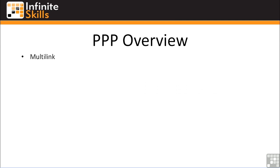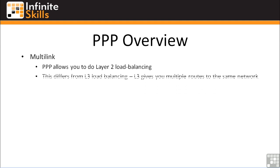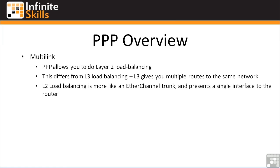Next, multi-link. PPP allows you to do Layer 2 load balancing, which differs from Layer 3 load balancing. Layer 3 load balancing gives you multiple routes to the same network in the routing table. Layer 2 load balancing is more like an EtherChannel trunk — it presents a single interface to the router. PPP, being a Layer 2 protocol, is much more efficient at load balancing than IP. IP load balancing across two equal-cost links sends all of one conversation down one link and all of another conversation down the other. If you have a lot of voice calls consuming bandwidth, one link could be clogged while the other sits unused. With PPP, load balancing is done at Layer 2, switching individual frames down each link and reassembling them on the other end.